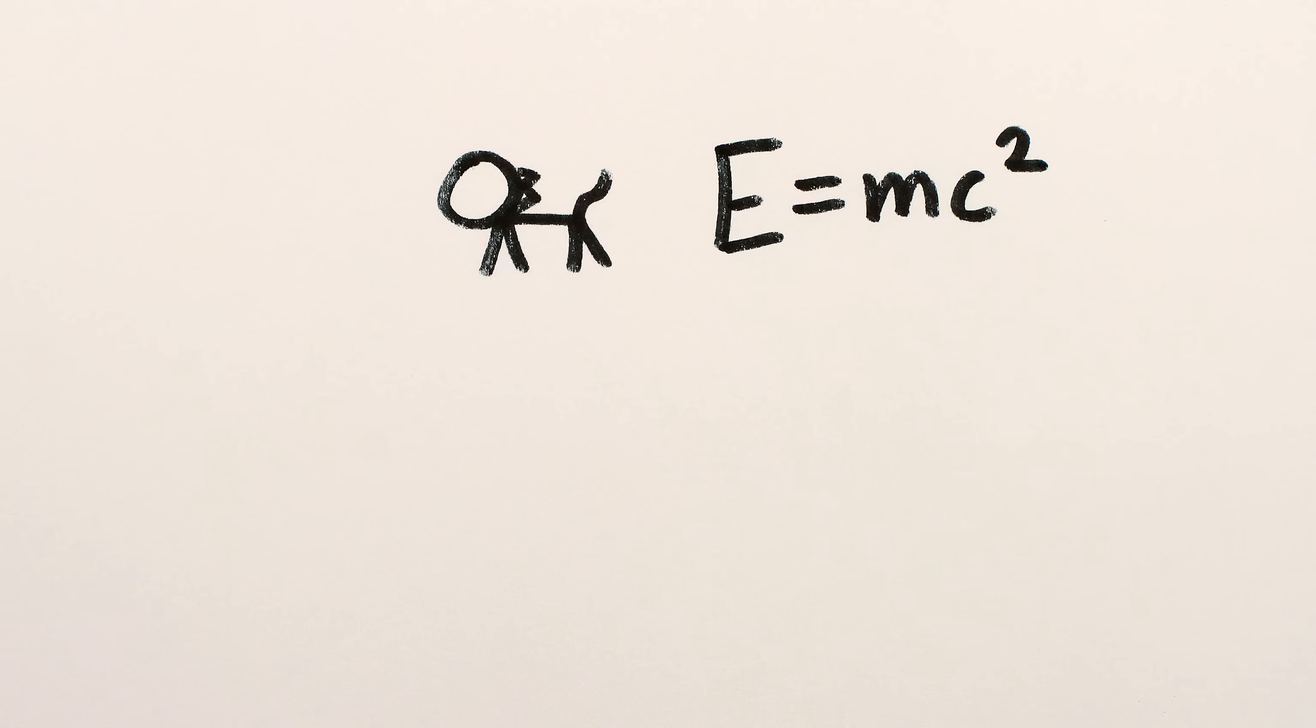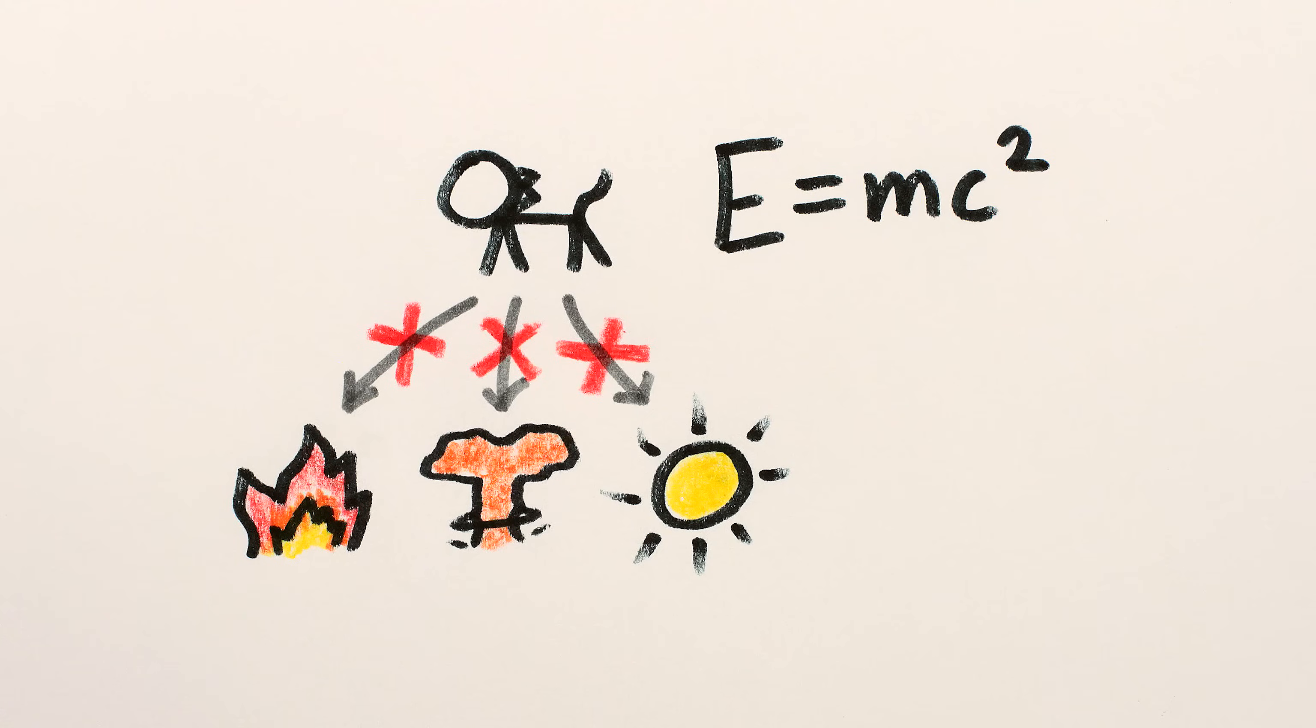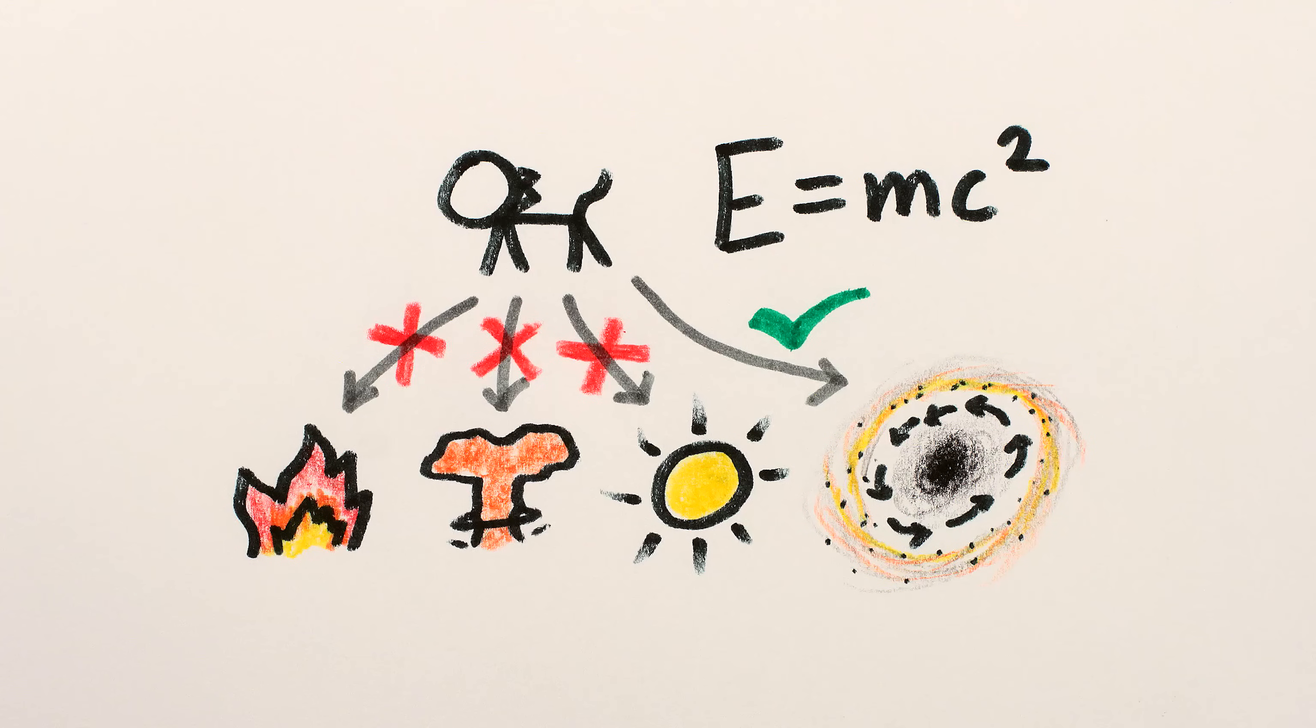So if you really want to take advantage of E equals mc squared and convert the mass of an object into energy, don't bother with chemical reactions or nuclear fission or nuclear fusion. Just throw it into a black hole.